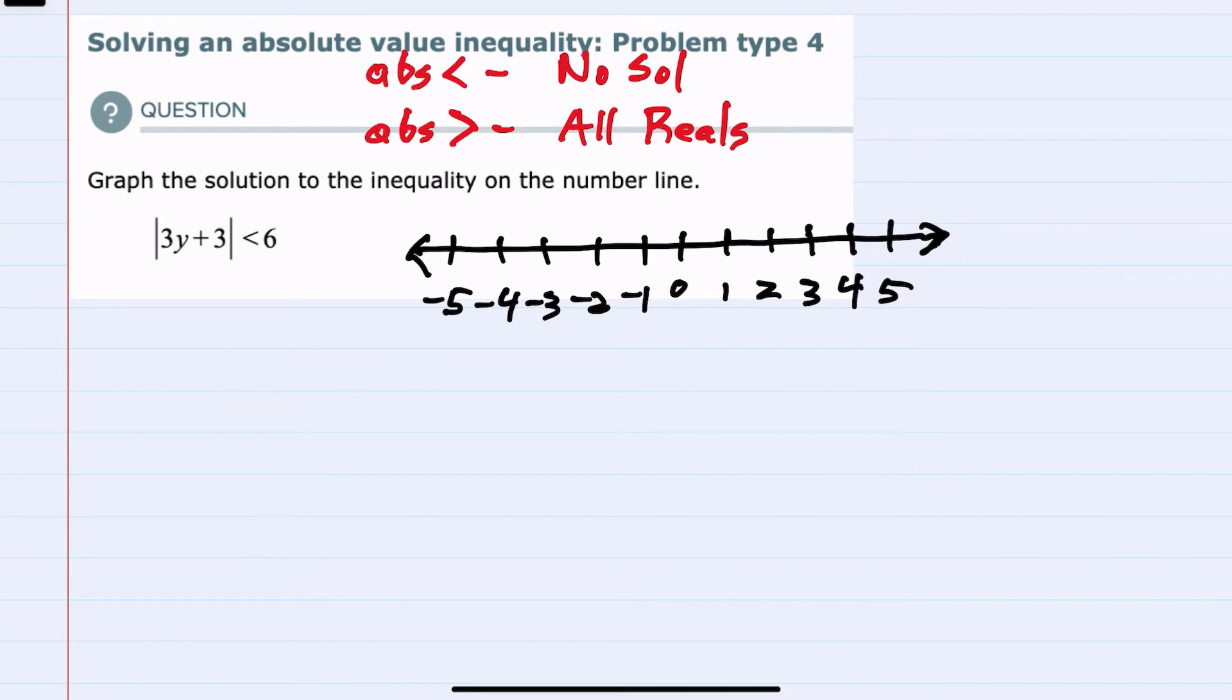The other special situation is the absolute value could be greater than a negative. And in this case everything works because an absolute value is always positive, it's always going to be greater than a negative number.